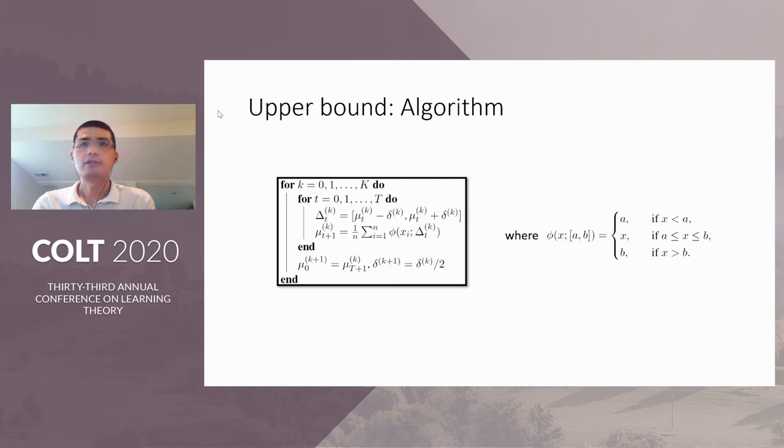So this is our algorithm. We have K different stages. Within each stage, we fix the interval length delta K and repeat T times. And in each step, we truncate the samples to an interval center around the current estimate with interval length delta K. And then we average the truncated sample to get a new estimate. At the end of the stage, we use the current estimate as the initialization for the next stage. And we also update the interval length to a half. At the end of all the stages, we just output the current estimate. And we are able to show that this algorithm achieved the upper bound mentioned in the previous slides.